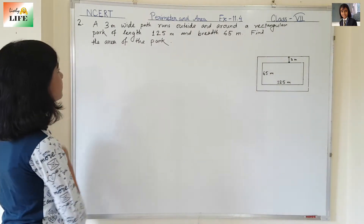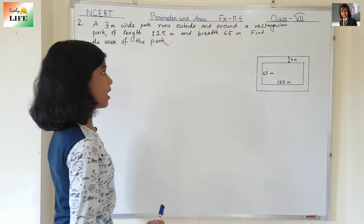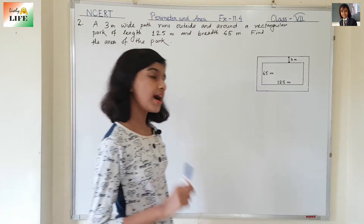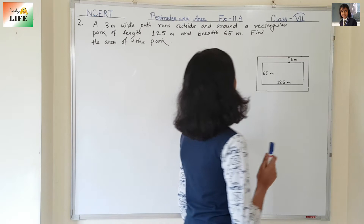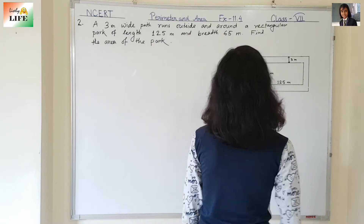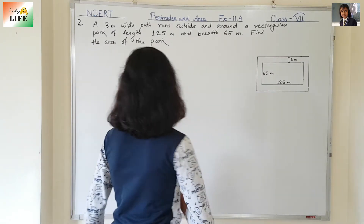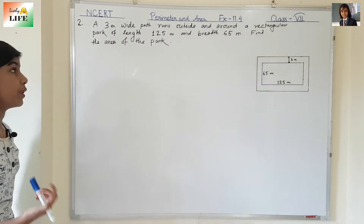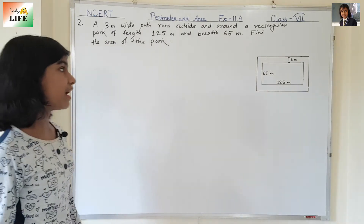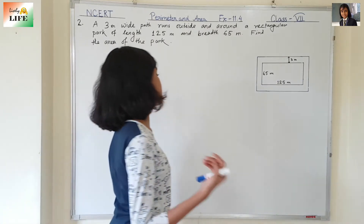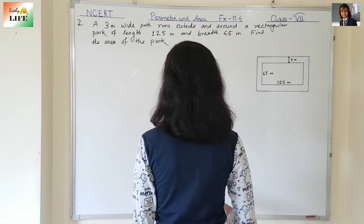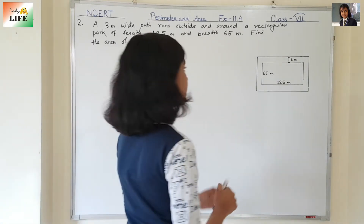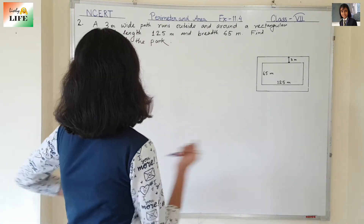A 3 meter wide path runs outside and around a rectangular park of length 125 meters and breadth 65 meters. Find the area of the path.